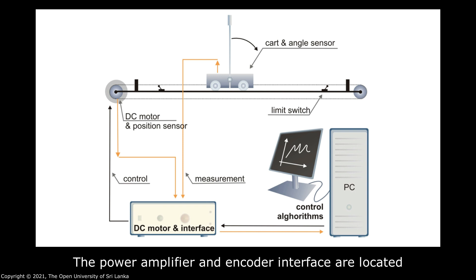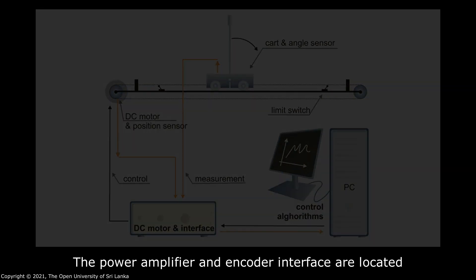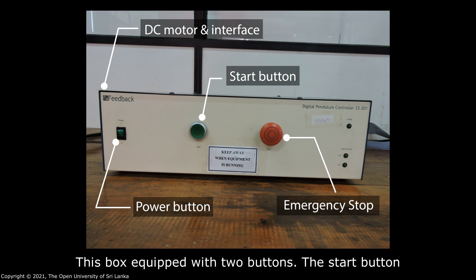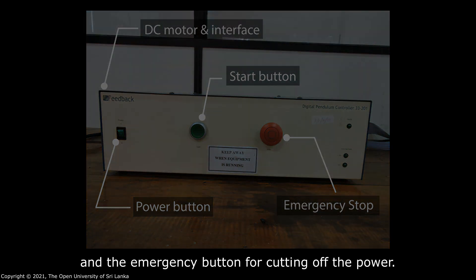The power amplifier and encoder interface are located in the digital pendulum controller box. This box is equipped with two buttons: the start button and the emergency button for cutting off the power.